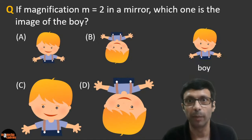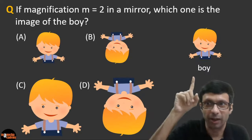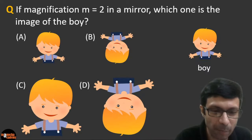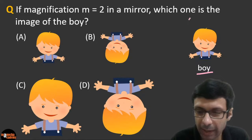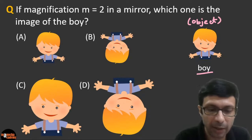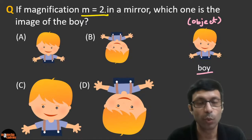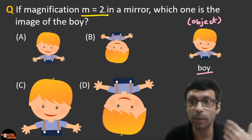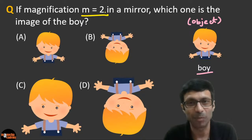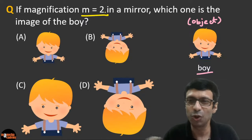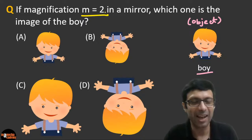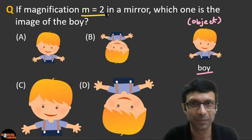If the magnification is 2 in a mirror, which one is the image of the boy shown? The magnification is given as positive 2. Magnification m = image height / object height = hi / ho. Substituting: image height is two times the object height. So it can't be the same size — it must be larger.